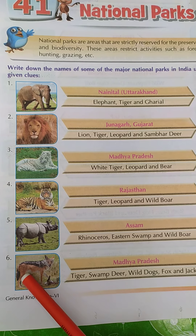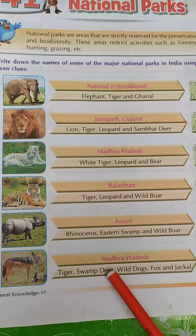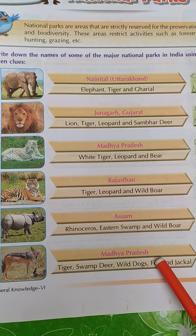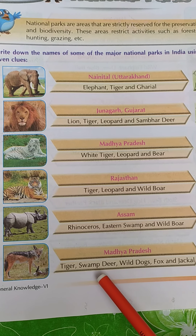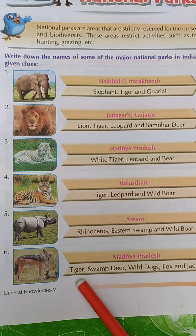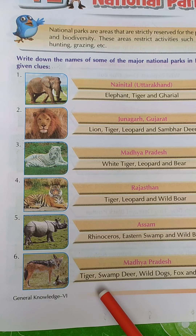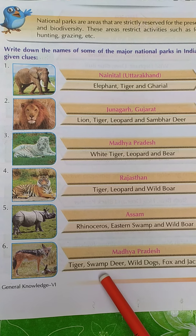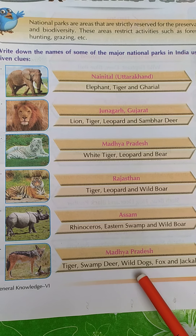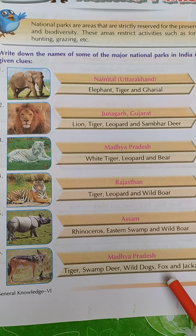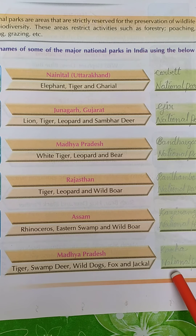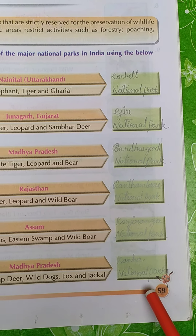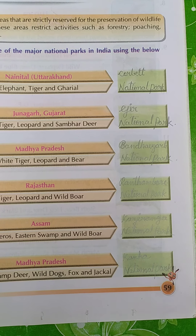Number six. The state is Madhya Pradesh. The animals are tiger, swamp deer, wild dogs, fox, and jackal. The name of this national park is Kanha National Park.